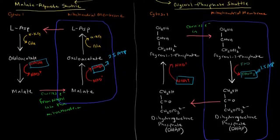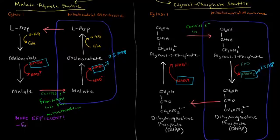So clearly, the malate-aspartate shuttle is the more efficient one. This is more efficient, more energy efficient. This is actually found in mammalian kidneys, the liver, and the heart.